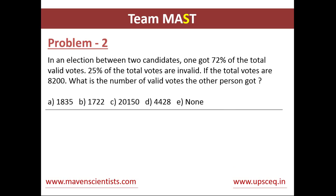Let's move on to Problem 2. In this problem, in an election between two candidates, one got 72% of the total valid votes and 25% of the total votes are invalid. So let's say there were 100 votes and only 75 were valid — the rest 25 are invalid. If the total votes are 8200, what is the number of valid votes the other person got? One candidate got 72% of the total valid votes, so we need to calculate the other 28% of the valid votes.